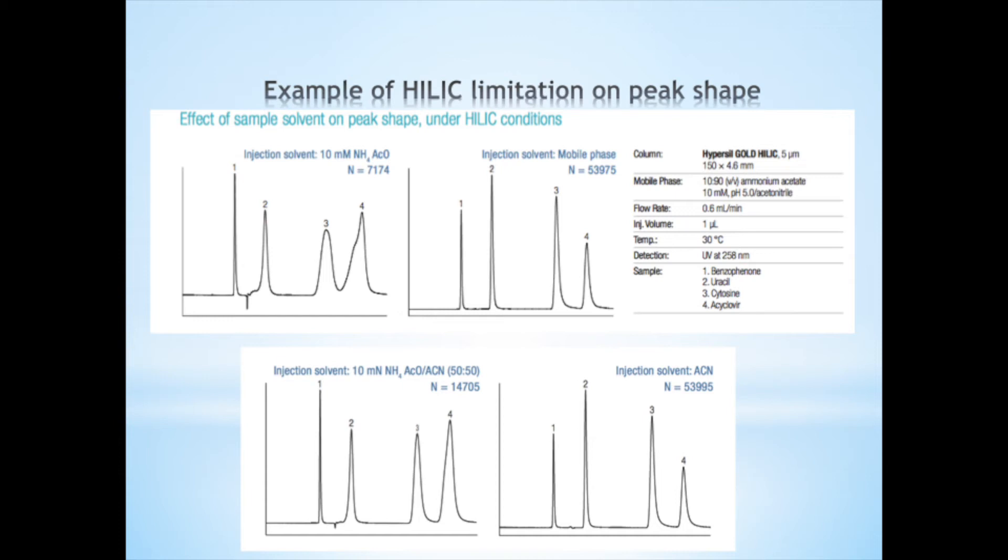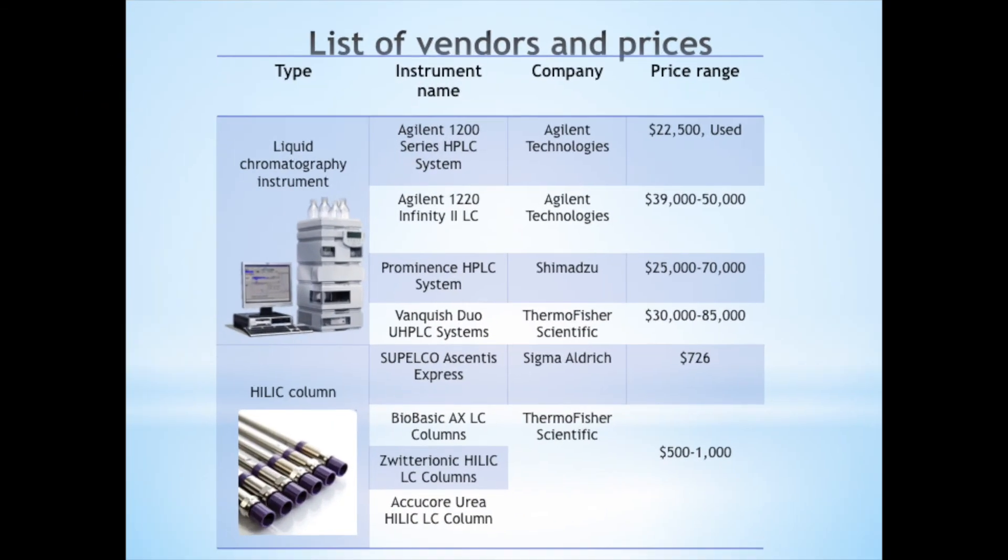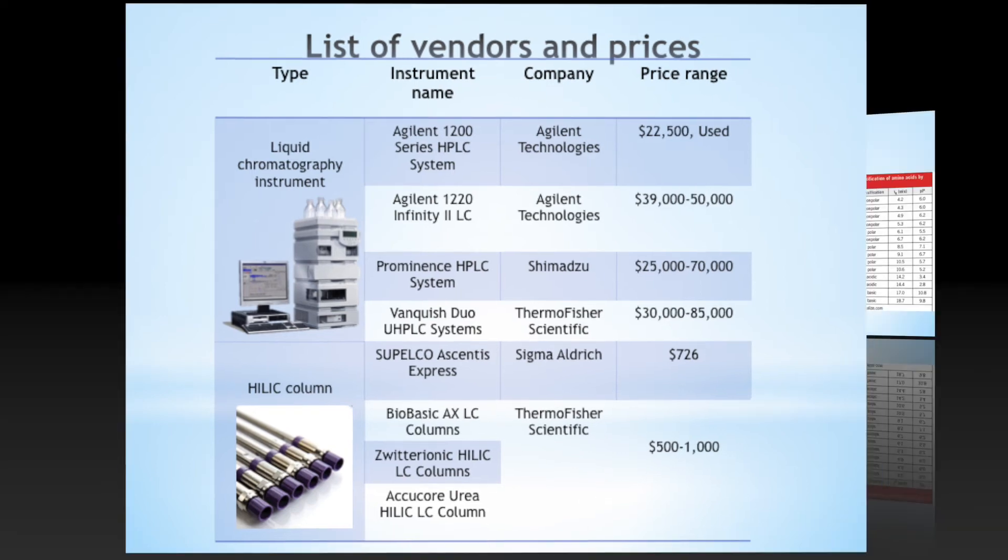Many instrumental companies sell liquid chromatography instruments and HILIC columns. Here is a list of some of these vendors, including Thermo Fisher Scientific, Sigma Aldrich, Agilent Technologies and Shimadzu. The price range varies with each company whether the instruments are new or used.